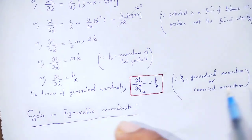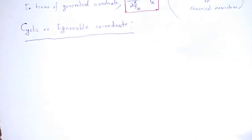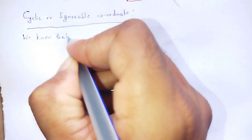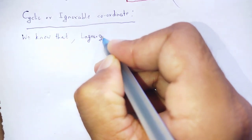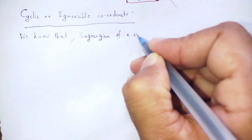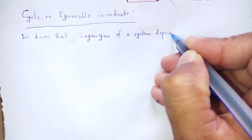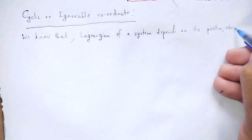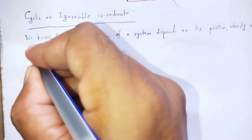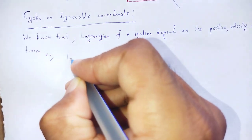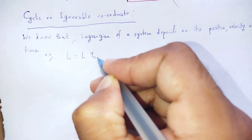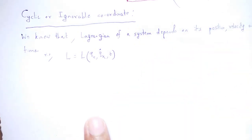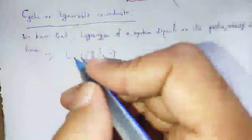Next, cyclic or ignorable coordinates. We know that the Lagrangian of a system depends on its generalized position coordinates, generalized velocities, and time — that is L = L(q, q-dot, t).